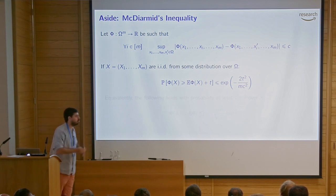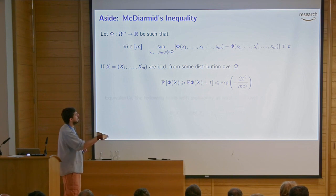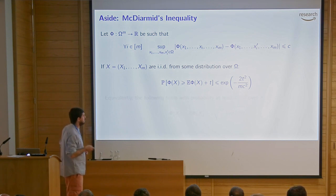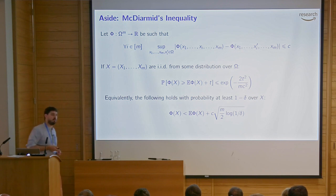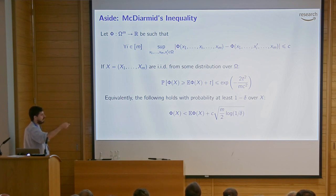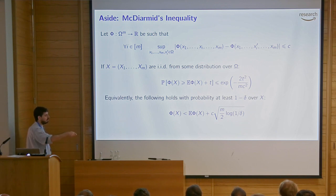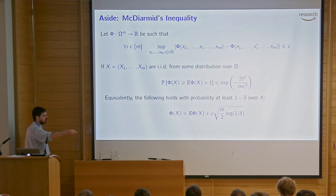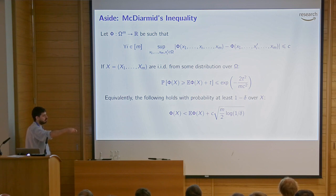Rearranging: with probability at least 1 minus delta, this random quantity must be less than its expectation plus something that depends on delta, on how much things can change when I change one point, and on the number of data points. This is a very simple concentration inequality, and we can apply it to prove one of these bounds: given m strings from some distribution over strings, how close is the empirical Hankel matrix to its expectation.